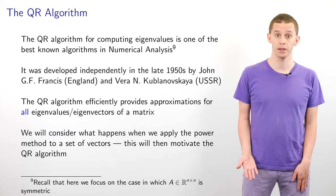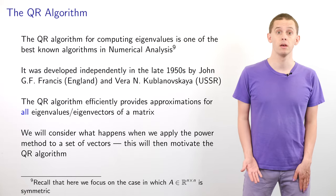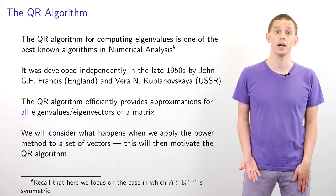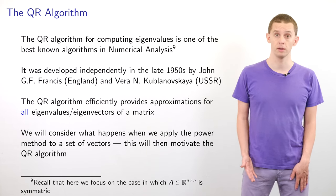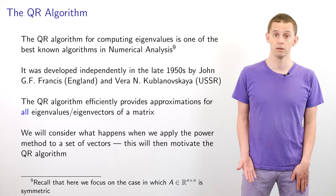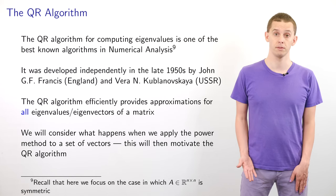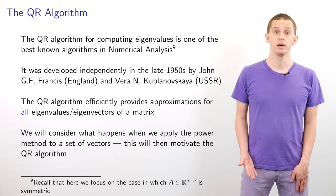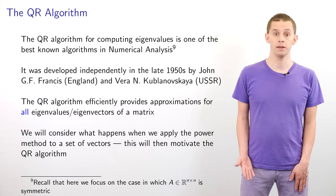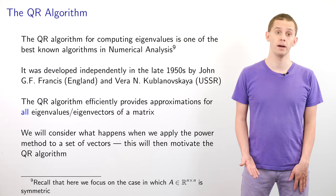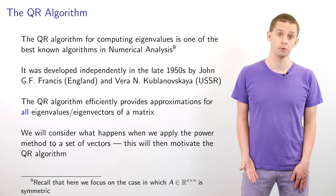The QR algorithm for computing eigenvalues is one of the best known algorithms in numerical analysis, and it was developed in the late 1950s independently by John Francis in England and Vera Kublanowskaia in the USSR. So far in this unit we have focused on algorithms for computing a single eigenvalue or eigenvector, but the QR algorithm allows us to efficiently compute good approximations to all of the eigenvalues and eigenvectors of a matrix. We're going to restrict to the case of real symmetric matrices for simplicity, and let's begin by looking at what happens when we apply the power method to a set of vectors, which will motivate how we can build the QR algorithm.